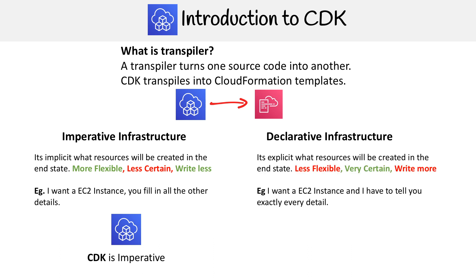When we look at declarative, on the right hand side here, it's explicit — we know what resources will be created in the end state. There's less flexibility, we're very certain of every single little thing that's going to happen. But we have to write a lot more code. A comparative example to imperative is: I want an EC2 instance, and I have to tell you exactly every detail of it. And that is what CloudFormation is — it's declarative by nature.